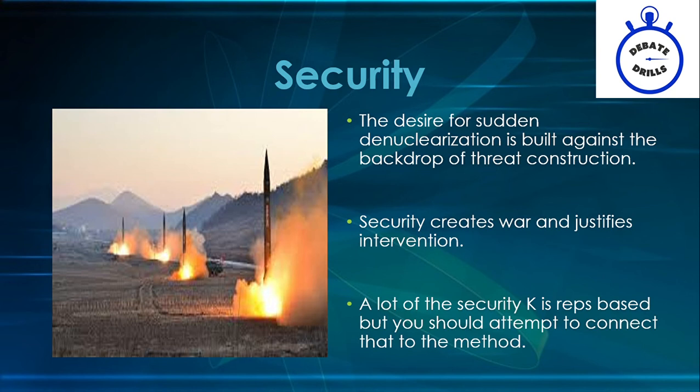This means the Security K independently turns the affirmative. This is an example of how, even though the critique starts as one of representations, it still ends up affecting the method. Without this, the critique becomes a one-trick pony, and a good 1AC with a good 1AR framework justification will move most of the 1NC offense.